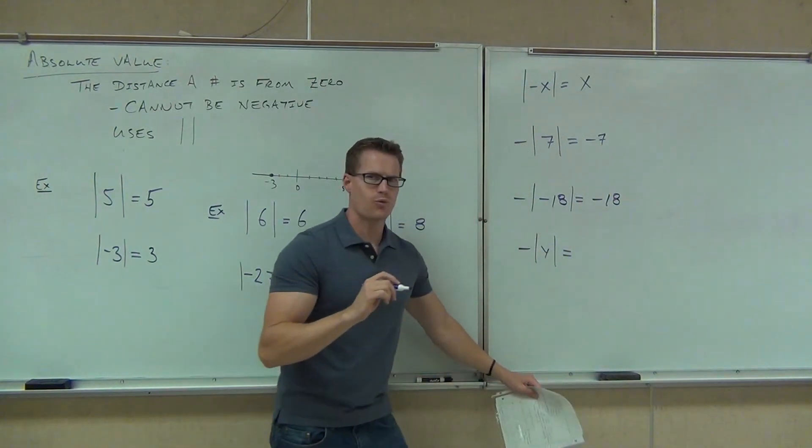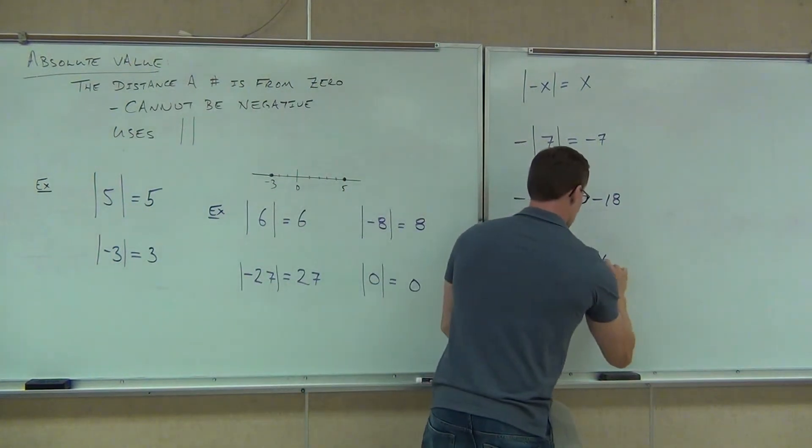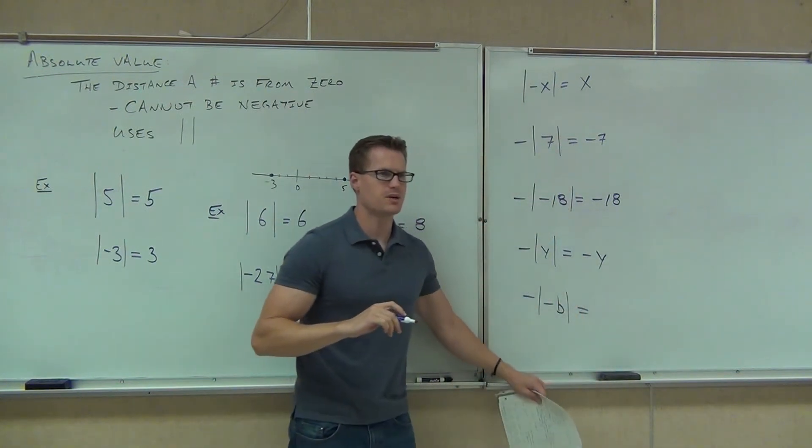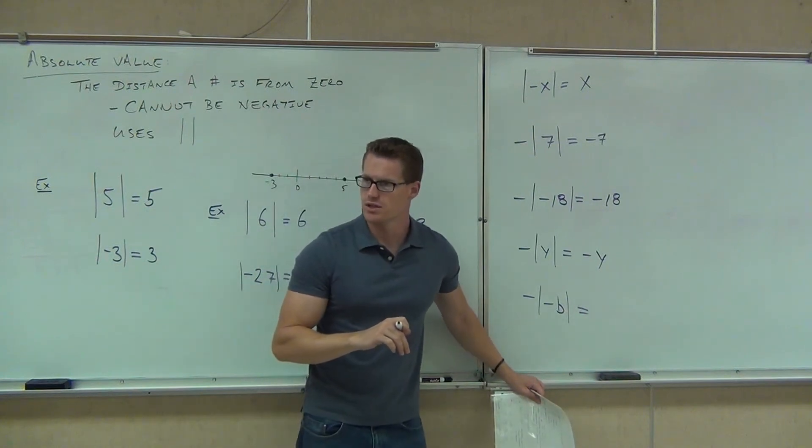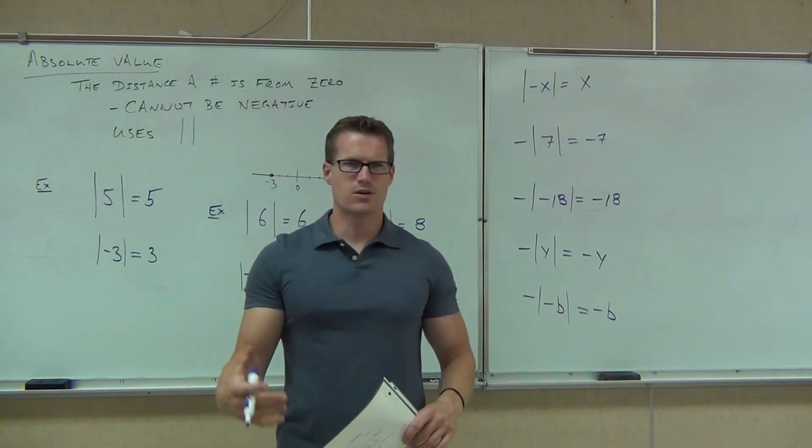Negative absolute value of y is going to be what everybody? Negative y. Perfect. And even if I have like a variable in here, negative absolute value of negative b is going to give you negative b. Very good. Very good. Negative b. Did you get negative b? Okay.